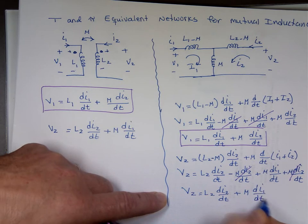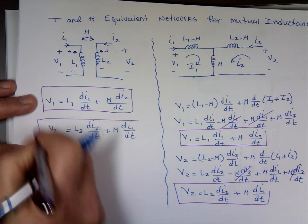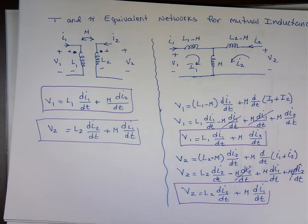And again, notice here, m di2 dt and m di2 dt, they cancel each other out. And we have V2 equals L2 di2 dt plus m di1 dt. And again, this one matches this one. So, that tells me this is really the equivalent of this. That's the equivalent circuit.